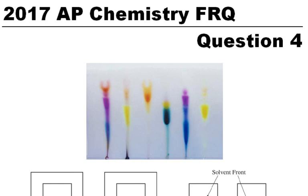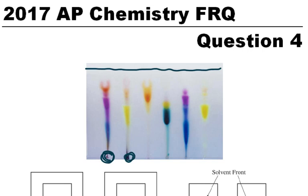Here's a picture of a paper chromatogram. Notice that we start off down here with the source, and then it smears up, and here is the solvent front. So where it starts, where the things end up, and the solvent front — that's important.